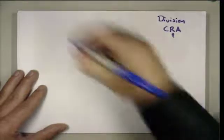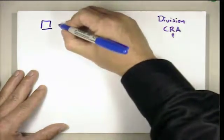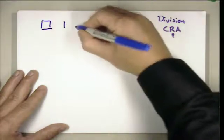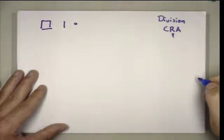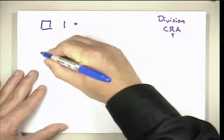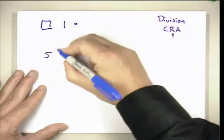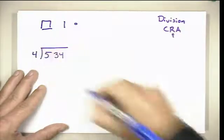In the concrete version we would be using place value blocks. So for our representations we're going to be using the square for hundreds, a line for our tens, and a small circle for our ones. So if I want to do the division problem 534 divided by 4...